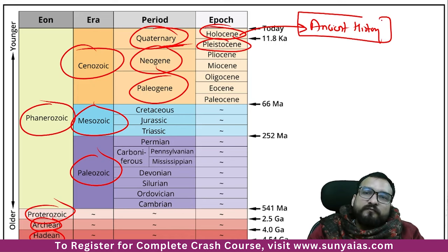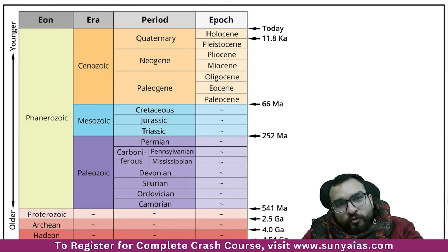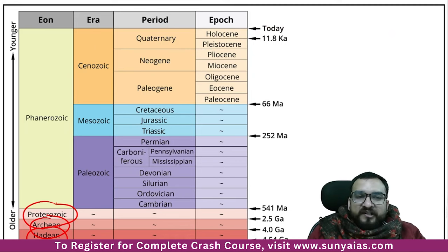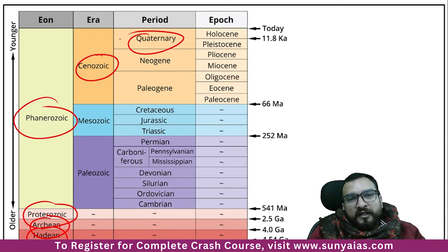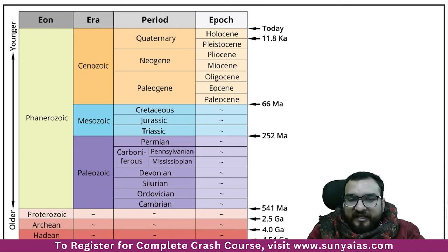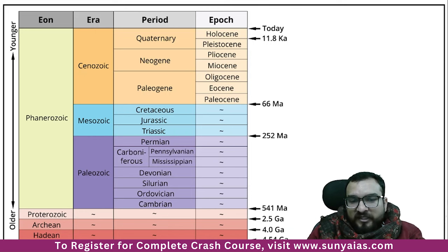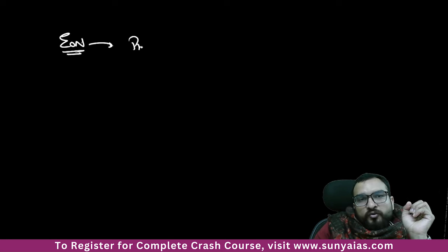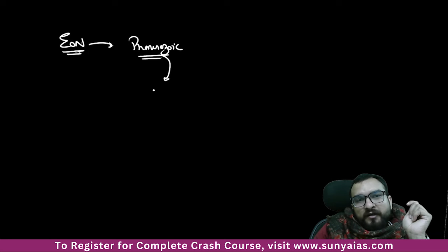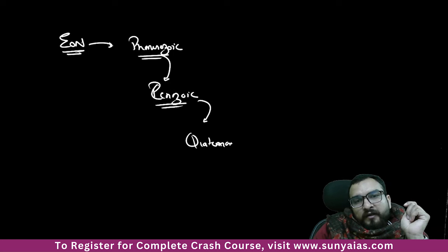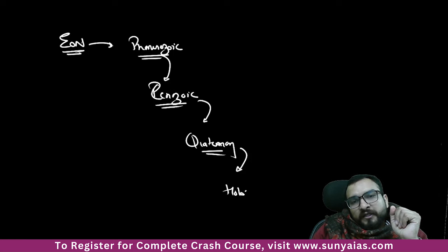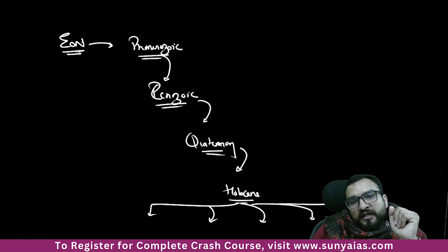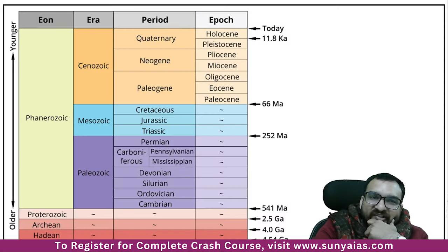I could have easily just marked these on a PPT slide, but I am making you understand it deeply. Moving from geological time scale to prehistoric times — I am in the Phanerozoic eon, Cenozoic era, Quaternary period, Holocene epoch — and now we open certain ages: Stone Age, Iron Age, Mauryan Age, Gupta Age, Harsha Age. History begins now.